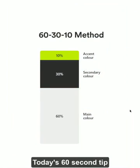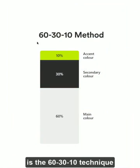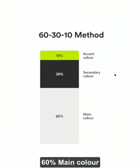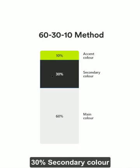Hi, and in today's 60 second tip, we're going to be going through the 60-30-10 technique for coloring our UI designs. That's 60% main color, 30% secondary color, and 10% accent color.